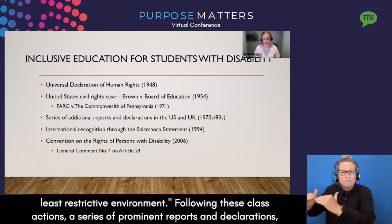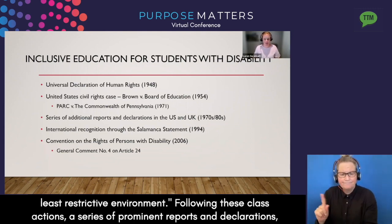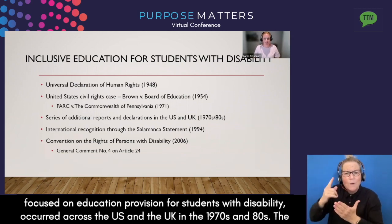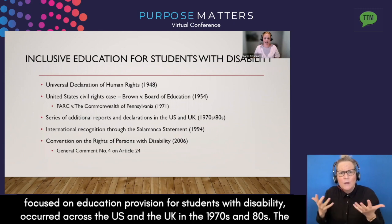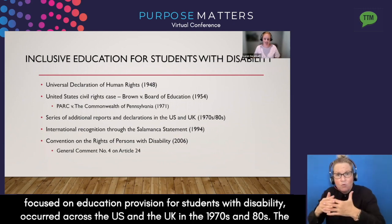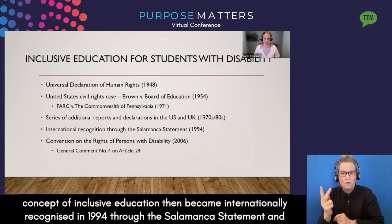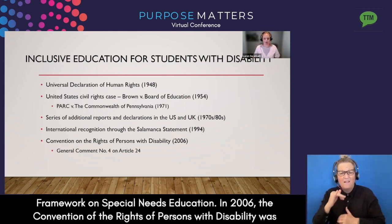Following these class actions, a series of prominent reports and declarations focused on education provision for students with disability occurred across the US and the UK in the 1970s and 80s. The concept of inclusive education then became internationally recognized in 1994 through the Salamanca Statement and Framework on Special Needs Education.